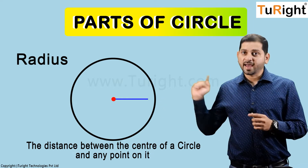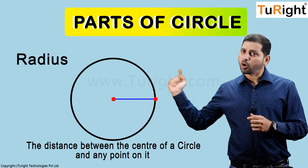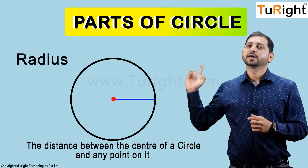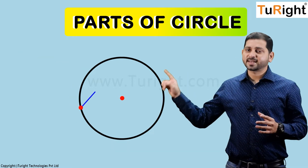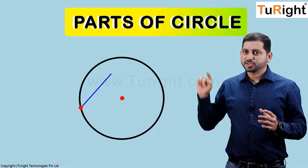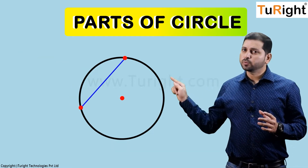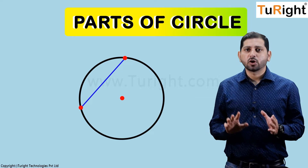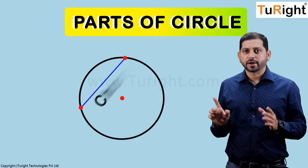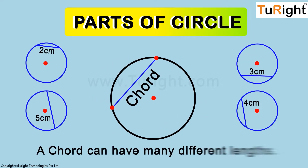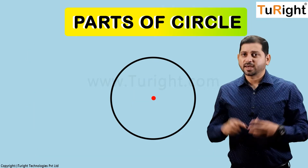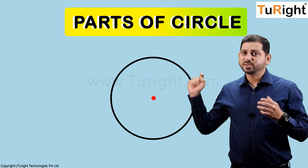Another point to remember is radius. The distance between the center of the circle and any point on it is called the radius. A line segment that joins two points on a circle is called a chord.